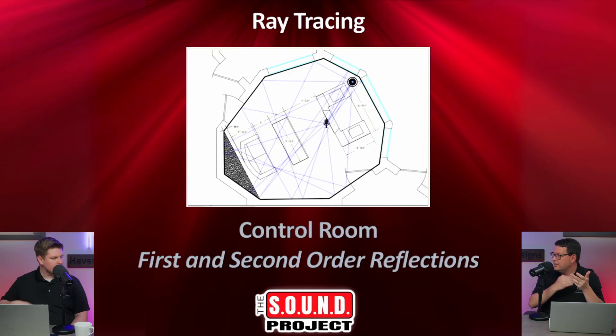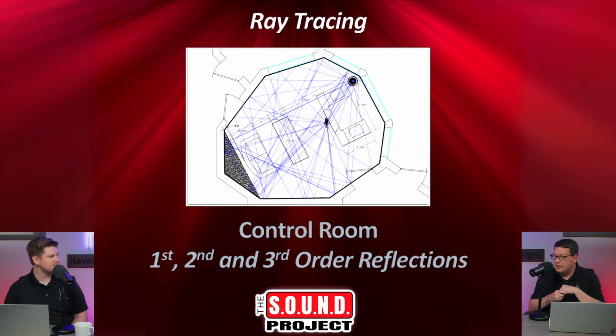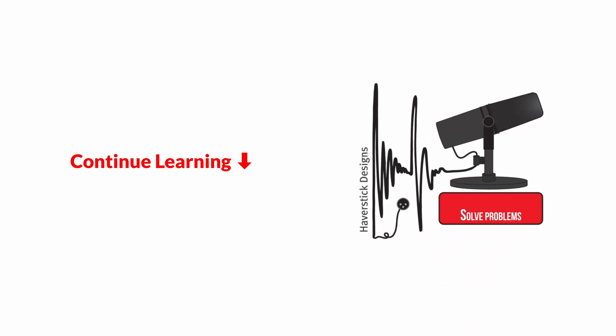Second order reflections bounce off two surfaces before reaching the listener, and third order reflections hit three surfaces. Sound will keep bouncing around the room, but first, second, and third order reflections are the strongest and hardest to deal with. Once you've taken care of those three orders, you won't have to worry about the fourth, fifth, and sixth because the sound is already being absorbed by those points.